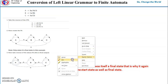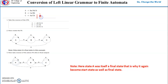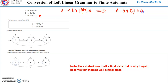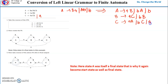We have three non-terminals: A, B, and C, and these are the productions. The first step is to reverse the grammar. Reversing means: A → Ba becomes A → aB; A → b stays as A → b; B → Ac becomes B → cA; B → b stays as B → b; C → Aa becomes C → aC; C → b stays as C → bC.